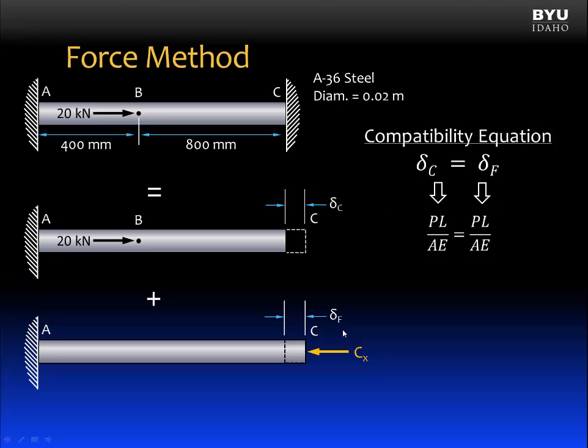The next step is to expand the deltas with the equation PL over AE, the axial deflection equation we discussed in the last unit. Now let's replace values for PL, A, and E with the values from these problems. Let's begin with delta C. And with delta C, we're looking at this structure right here.